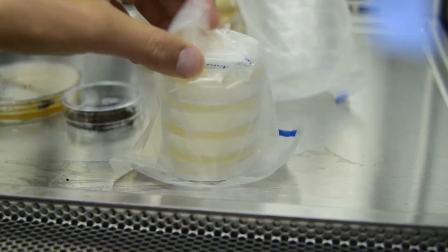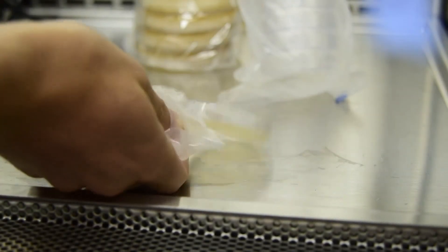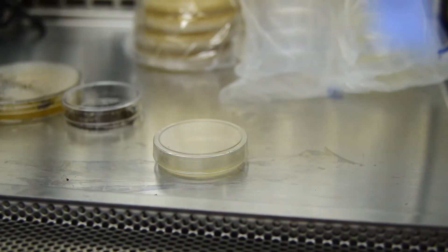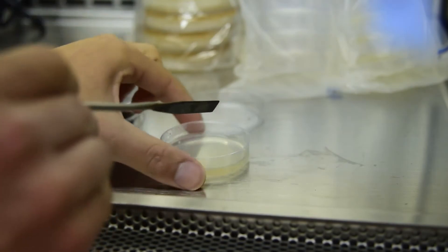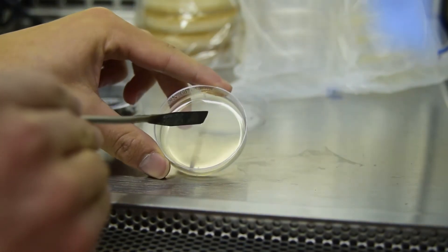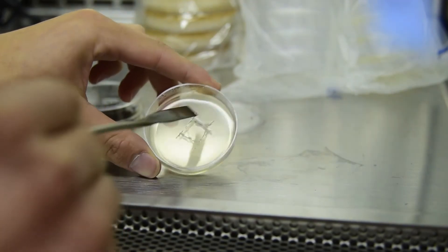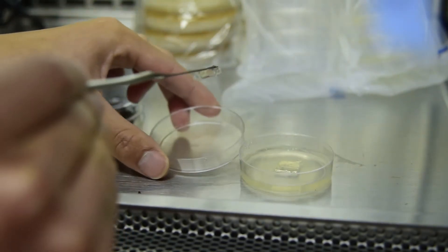Lastly, retrieve a 60mm nutrient plate to make a cutlet. Cut the square out with a sterilized spatula, then place that square on the lid.